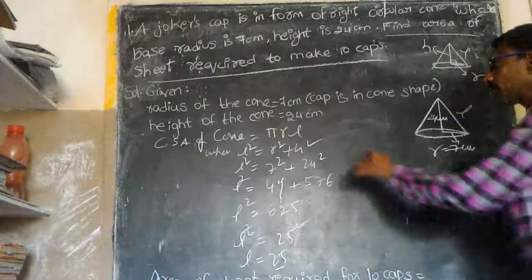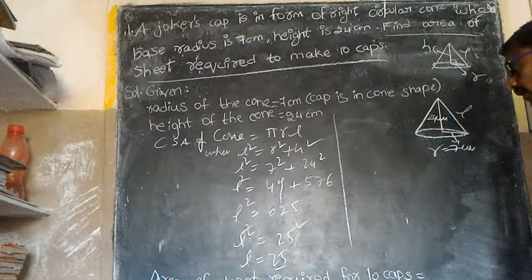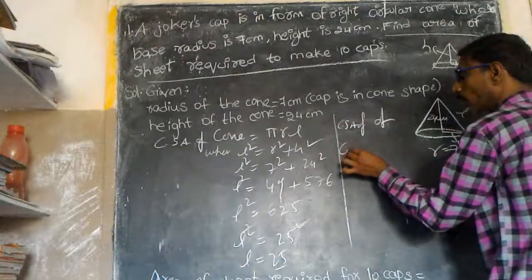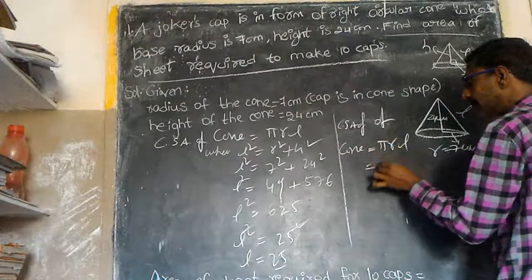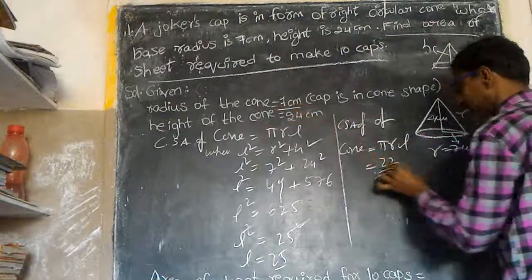The curved surface area of the cone is equal to πRL. π equals 22/7, R equals 7, L equals 25.